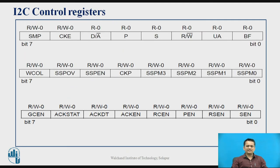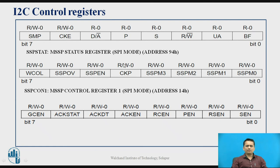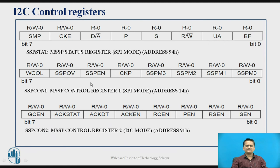When writing a program for I2C communication, you control it using different control registers. The key registers are the SSP Status Register at file address 94H, the SSPCON1 register, and SSPCON2. These three important registers — SSPCON1, SSPCON2, and SSP STAT — are what you need to deal with when writing programs for PIC microcontroller I2C communication.